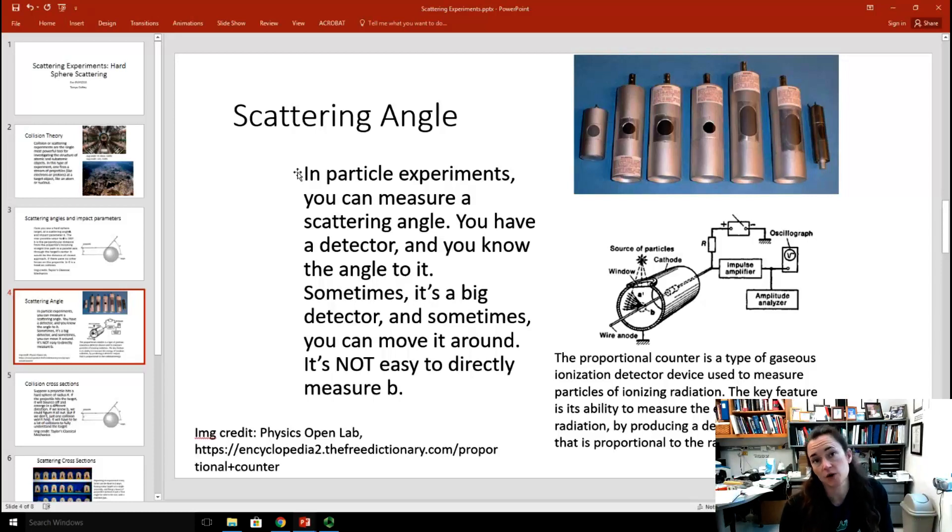To give you an idea about some old-school type detectors that people had, here is the simplest kind that you can get, a proportional counter. A proportional counter is a type of gaseous ionization detector device, and it's used to measure particles of ionizing radiation. The key feature in proportional counters is the ability to measure the energy of an incident radiation by producing a detector output that's proportional to the radiation energy.